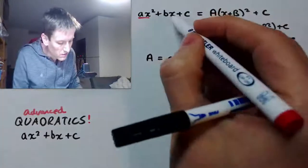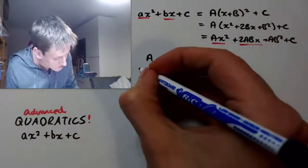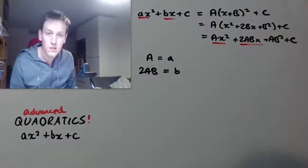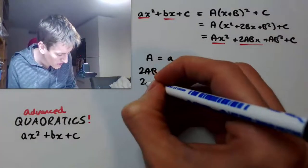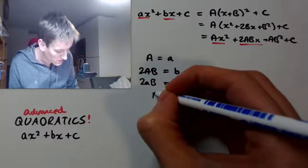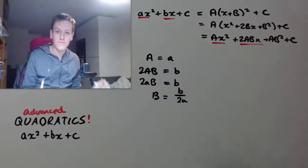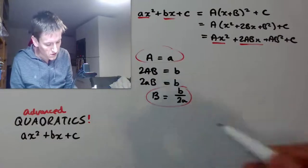If I look at the next term here, the bx and the 2abx, so this gives us the 2ab has to be equal to little b. But capital A is just the same as small a. So I've got 2a capital B equals small b. So that means I could take my capital B to be b divided by 2a. So I've got two of them that I've worked out.